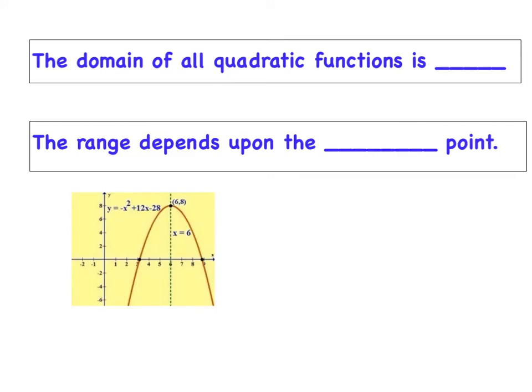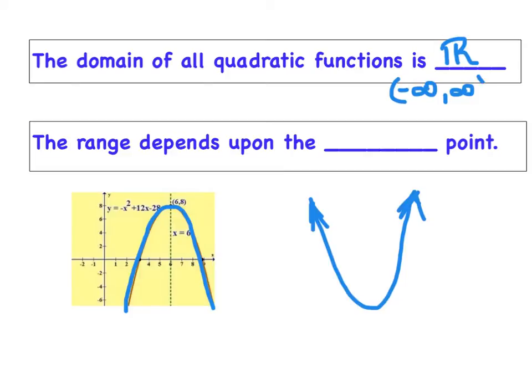We've talked a lot about domain and range lately, and tonight's no exception. Regardless of whether the parabola opens down like this one does, or if it opens up like this one, the graph extends infinitely to the left and infinitely to the right, and therefore the domain is what we call the set of all real numbers. Or you could also say negative infinity to infinity if you prefer.